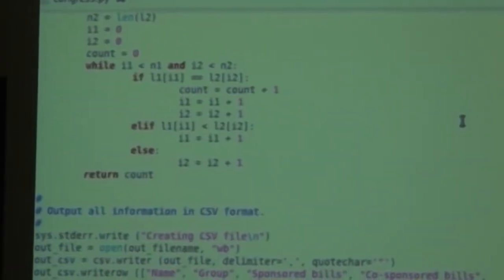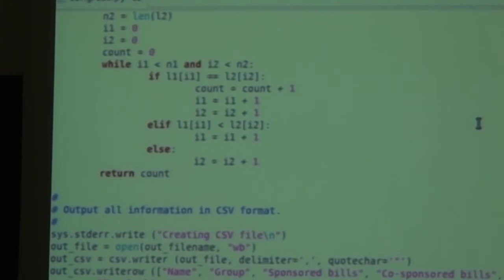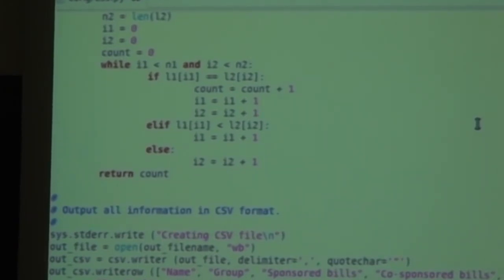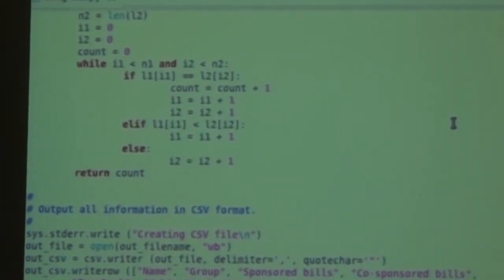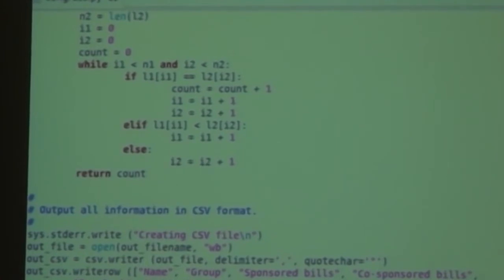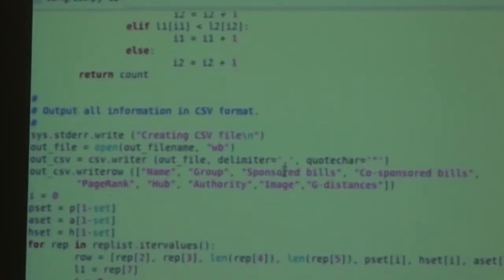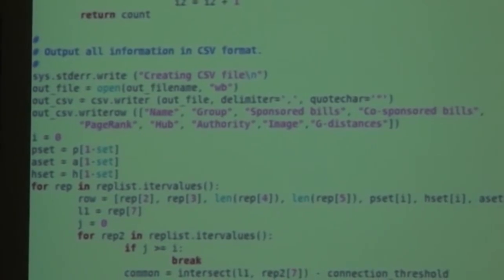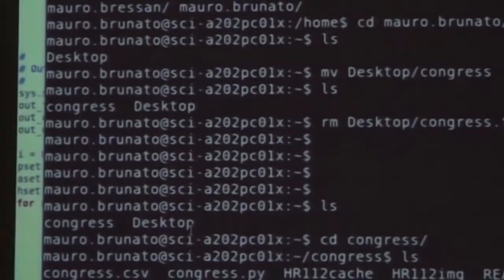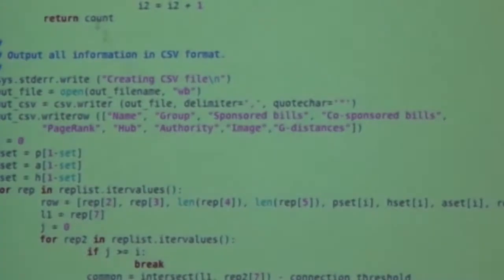Next, the second thing that I wanted to do was find also this undirected graph. So actually what I do is for every pair of representatives, I compute the intersection of the list of bills that they have, and the size of the intersection is exactly the value of the edge. Finally, I output everything onto a CSV file. I will give you that.